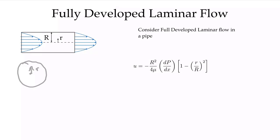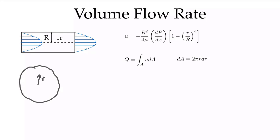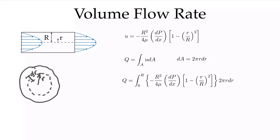Once we have this solution, there are many things we can do with it. We can calculate the volume flow rate. The volume flow rate through our pipe comes from integrating the velocity with respect to area. For our circular pipe, that element of area is 2πr dr. If we look at our cross-section at some radius r, our element of area is the circumference 2πr times the thickness dr, giving us our area element dA.